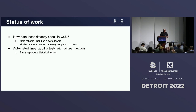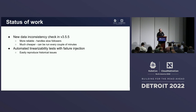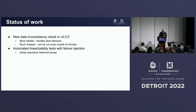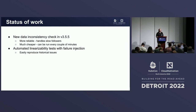As for the current status: a new data inconsistency check has been introduced that can be enabled now. It's much more reliable by handling slow followers and much cheaper — easy enough to run every minute instead of every few hours. We are already running linearizability tests, which verify the general system property that the system behaves as it should, and we can easily reproduce all the issues we encountered this year.